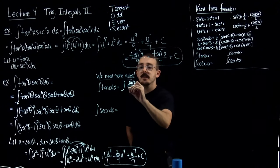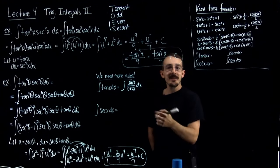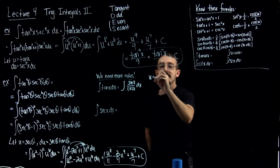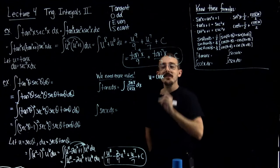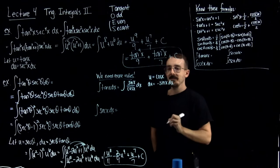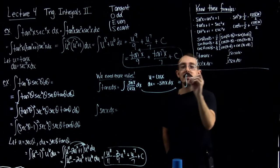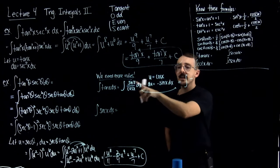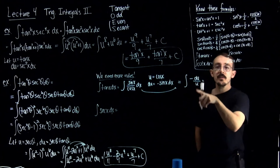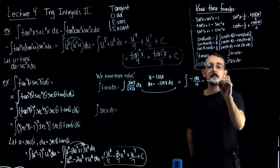Tangent is the same thing as sine over cosine, and we have a strategy to integrate something like that. You can see sine and recognize it's the derivative of cosine up top. So if you're thinking u-substitution, you're correct. Let u be cosine, so du equals negative sine of x dx. Plugging that in, we get negative du over u.